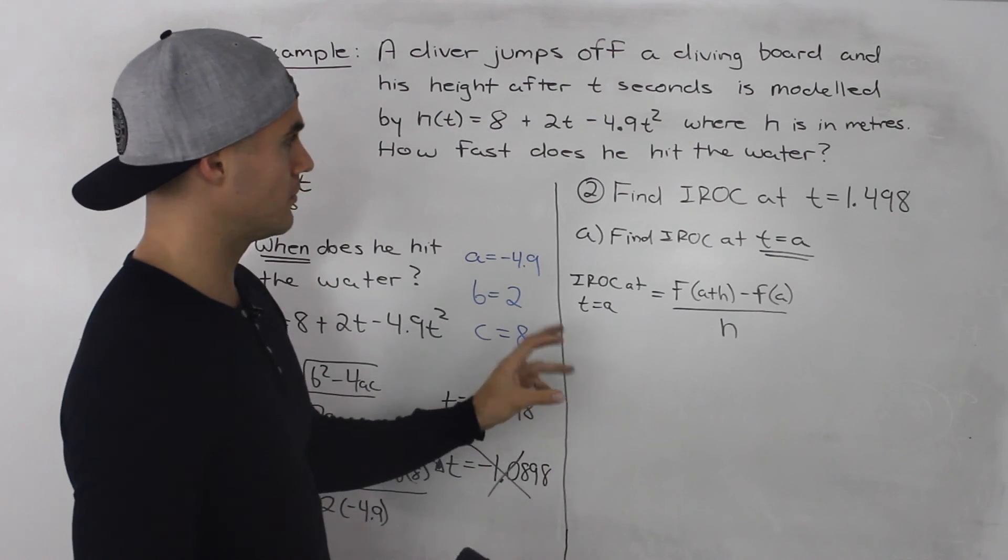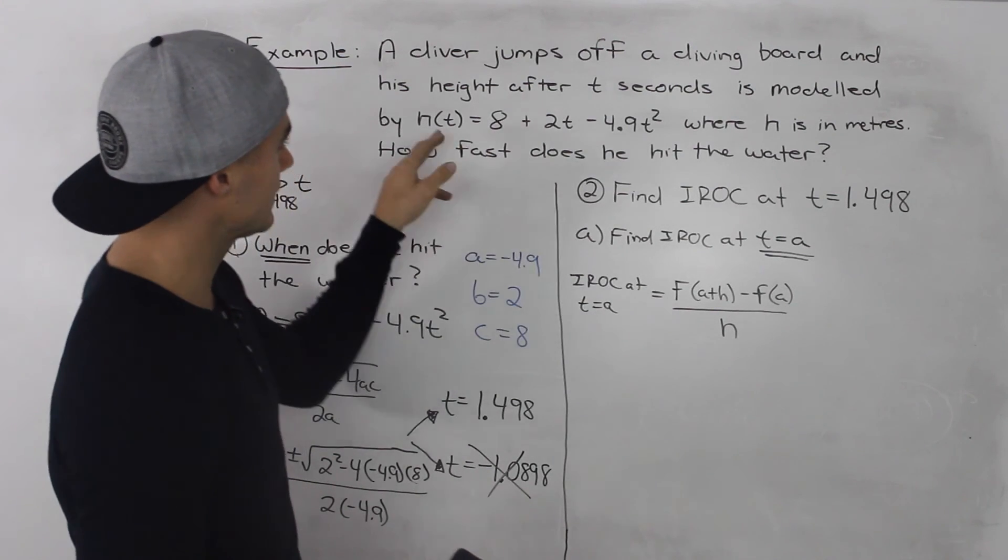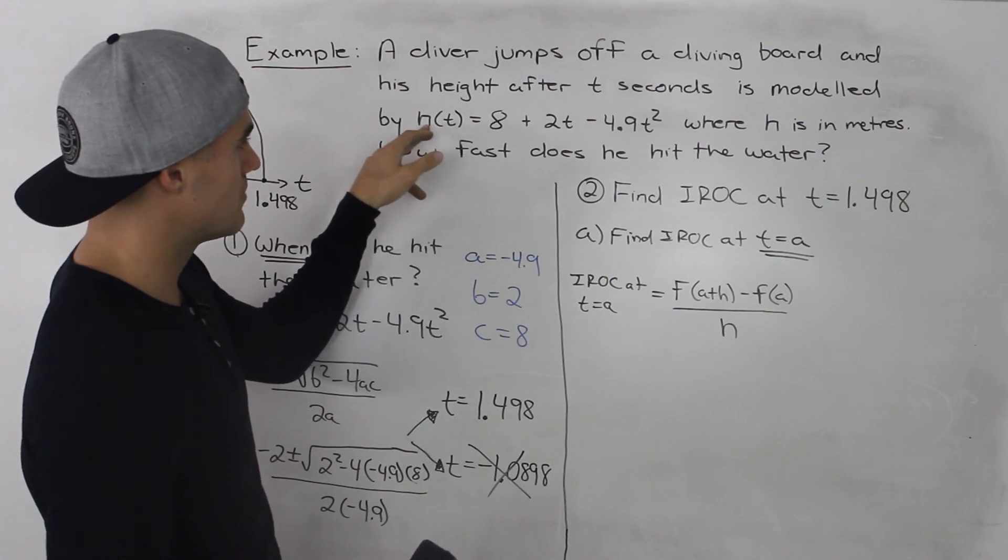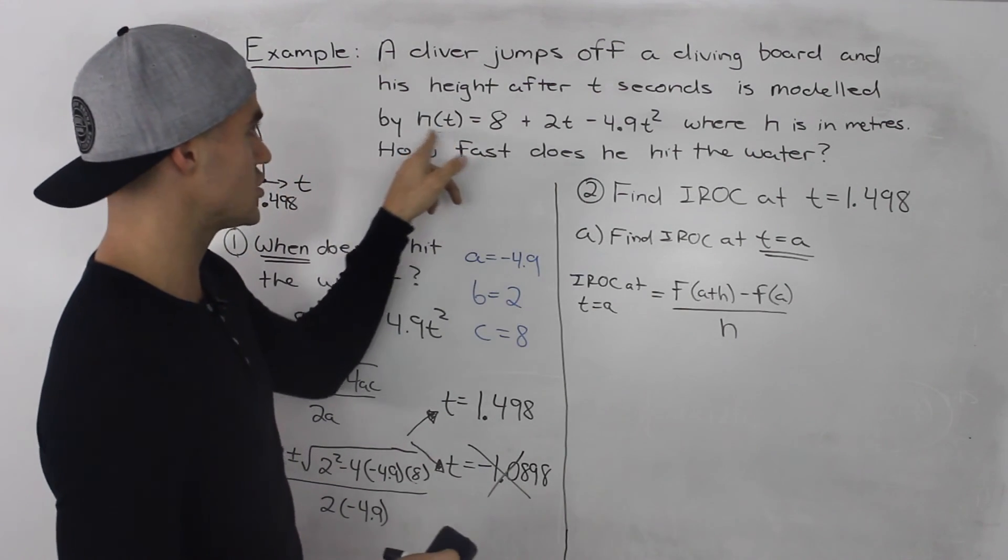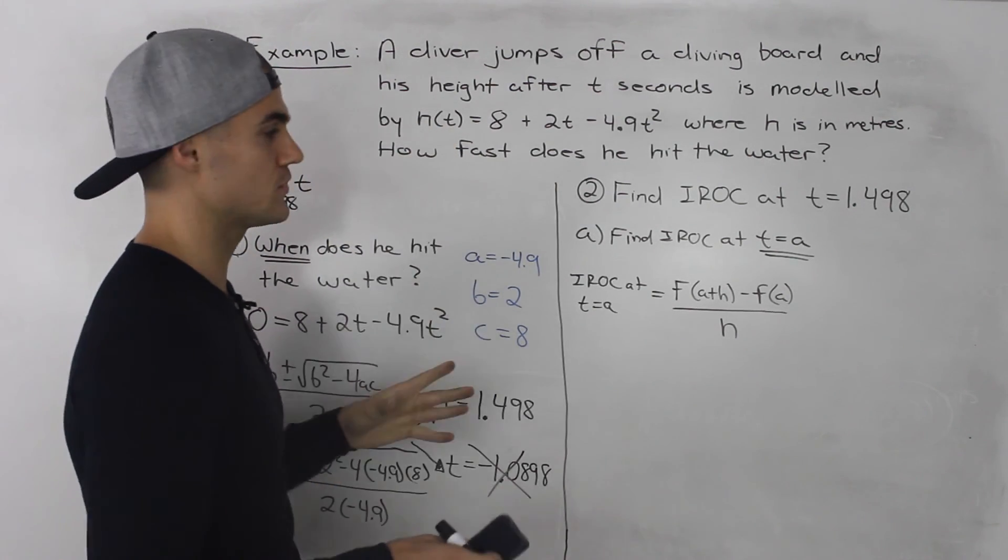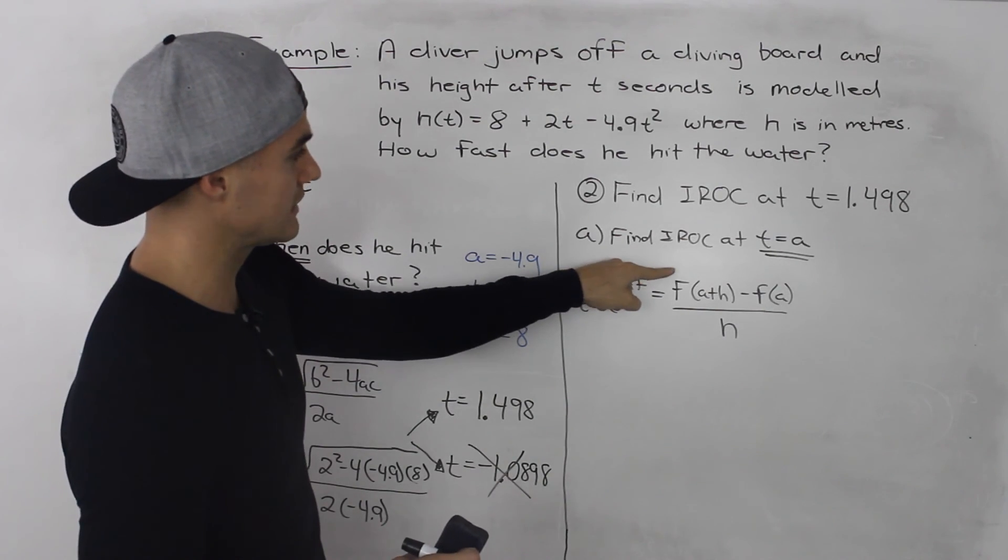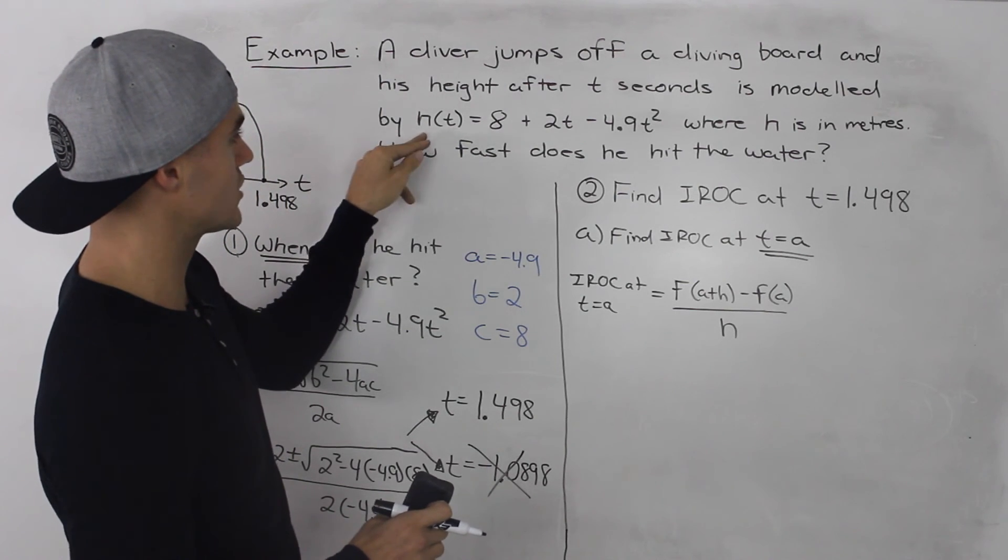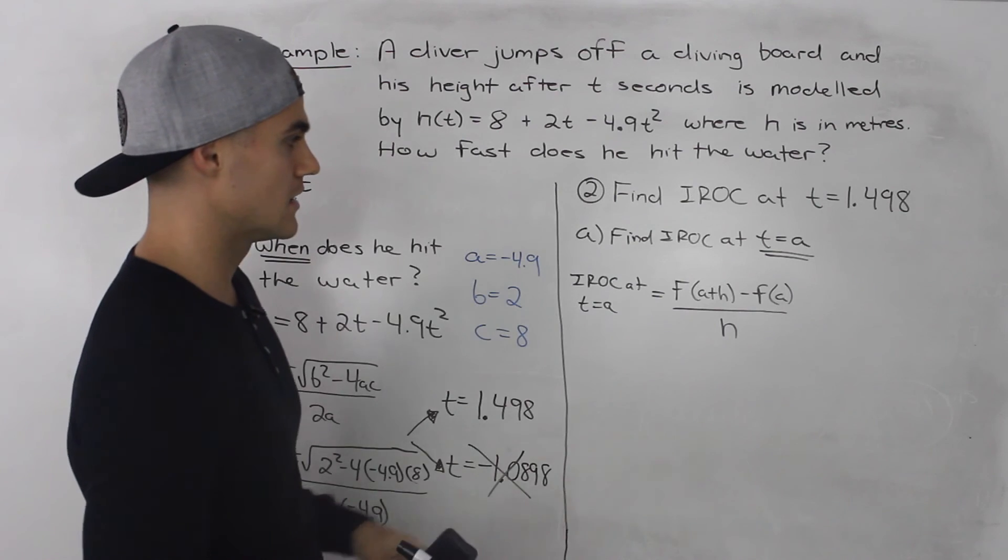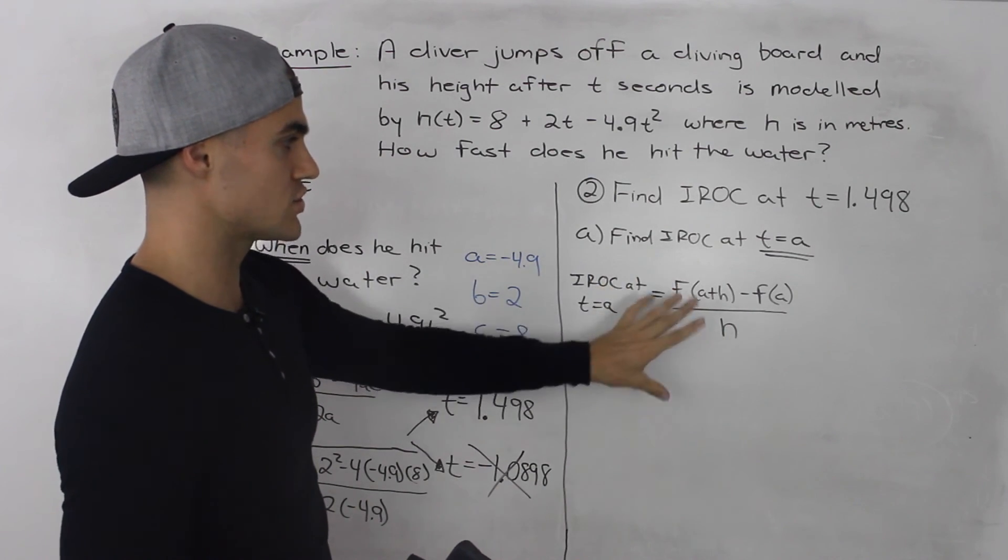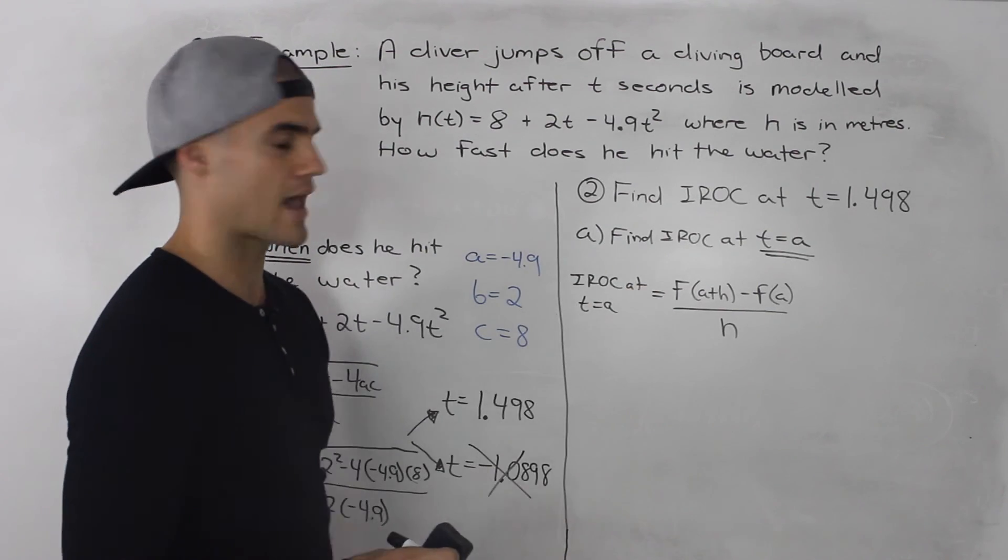Now one thing I want to point out in this specific question, this f here, technically it should be an h, but I didn't want to put h because this h in the difference quotient and this h in this question have nothing to do with each other. And I don't want you getting confused. So technically this f should be an h because in this question the dependent variable is the height. But for the difference quotient and just to keep it simple, I'm going to keep the function labeled as f.